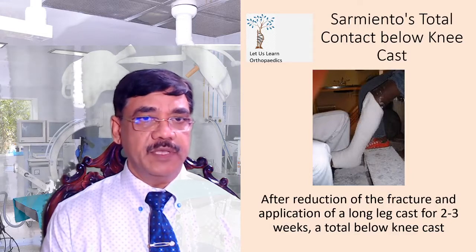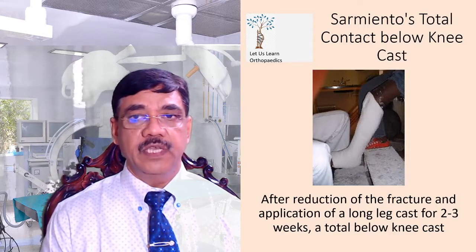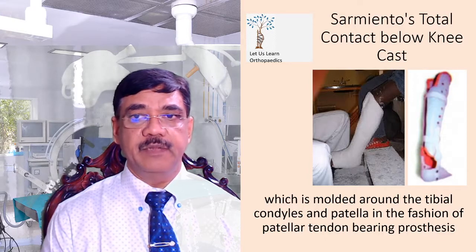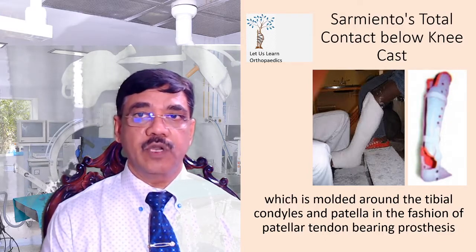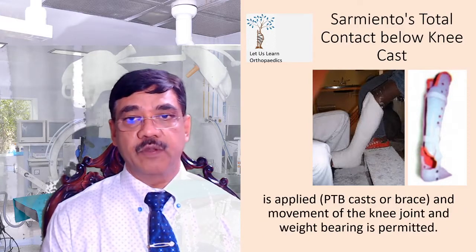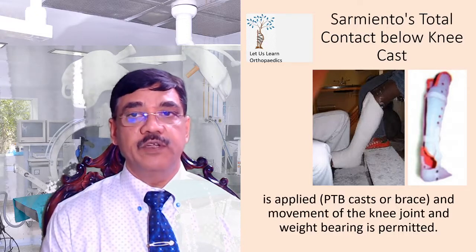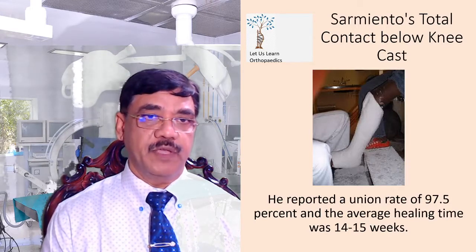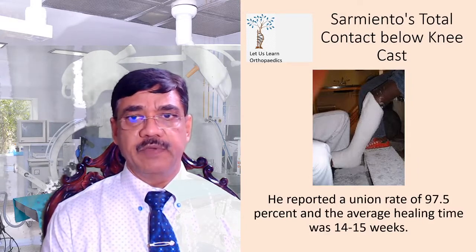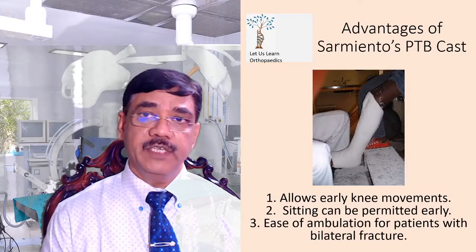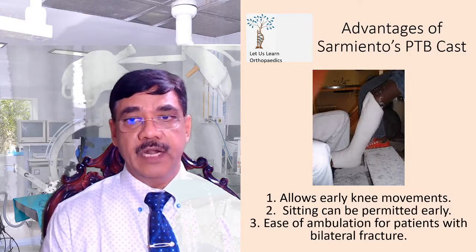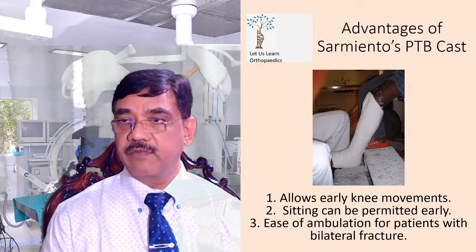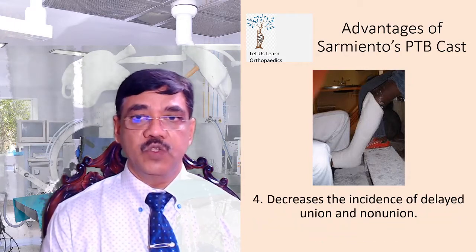After reduction and application of a long leg cast for two to three weeks, a total contact PTB (patellar tendon bearing) cast, molded around the tibial condyle and patella, is applied and movement of the knee joint and weight bearing is permitted. Serbento reported a union rate of 97.5% with an average healing time of 14 to 15 weeks. The advantages of Serbento's PTB cast include: it allows early knee movement, early sitting, easy ambulation for patients with bilateral fractures, and it decreases the incidence of delayed union and non-union.